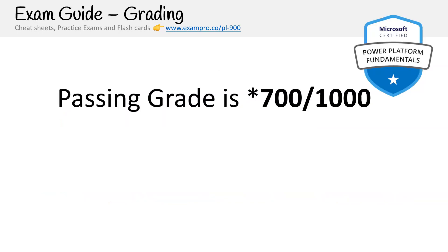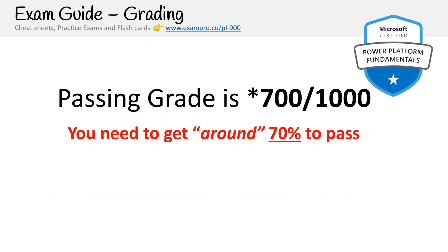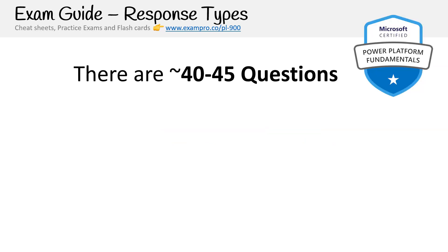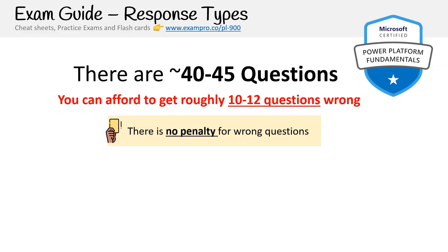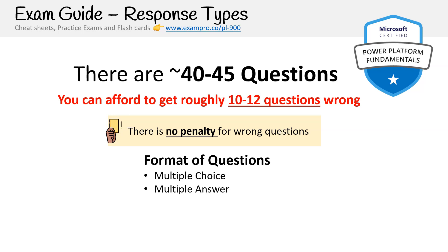In order to pass the exam, you have to score 700 points out of 1000, which generally equates to 70%. But it's around 70% because Microsoft uses scaled scoring, meaning they could adjust it based on how many people are passing or failing — so always aim to get higher than 70%. The exam contains about 40 to 45 questions, so you can afford to get roughly 10 to 12 questions wrong. There is no penalty for wrong answers, so you should always choose an answer. Questions come in a few formats: multiple choice, multiple answer, drag and drop, and yes or no questions.